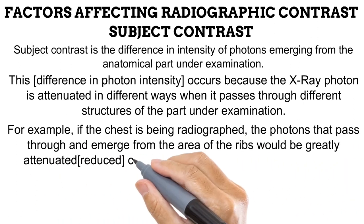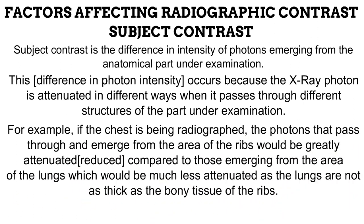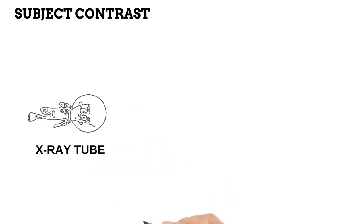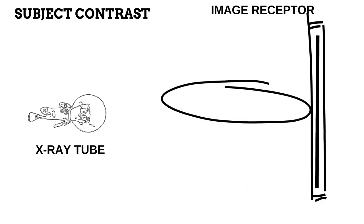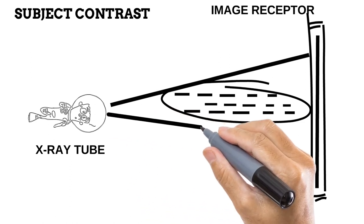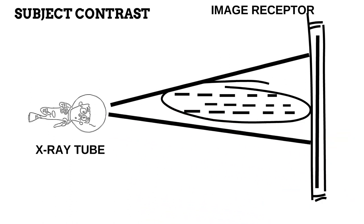For example, when the chest is radiographed, photons passing through the ribs are greatly reduced compared to photons passing through the lungs, which are much less attenuated as the lungs are not nearly as thick as bony tissue. Using an illustration: imagine an x-ray tube on one side and an image receptor on the other, with an anatomy of similar-thickness structures — a low subject contrast part. Three hypothetical photons pass through and receive the same degree of attenuation, arriving at the image receptor looking alike. The image produced will therefore have similar densities across it, producing low radiographic contrast. This explains why plain radiographs of the abdomen have low radiographic contrast, as the abdomen contains mainly soft tissue of similar thickness.